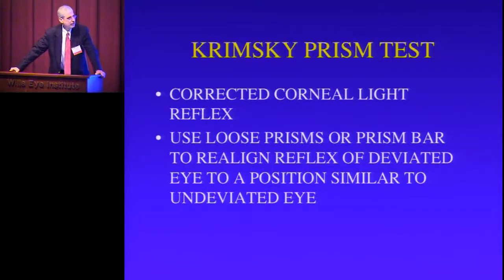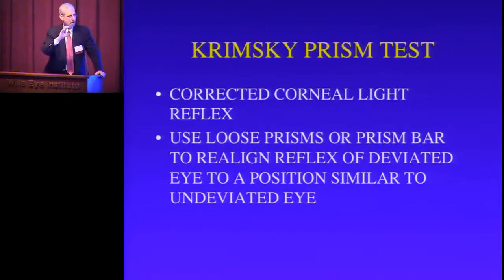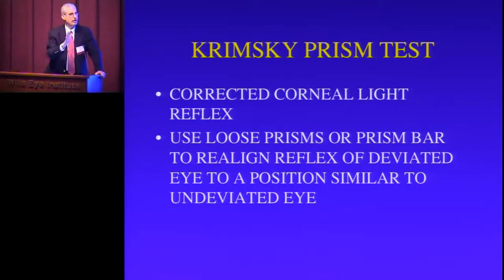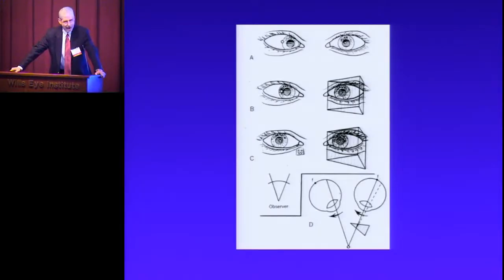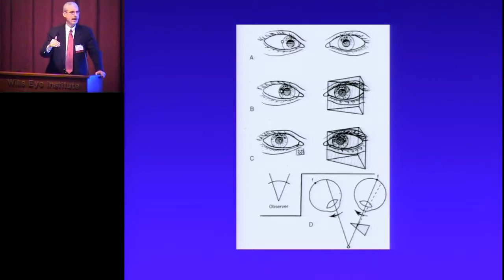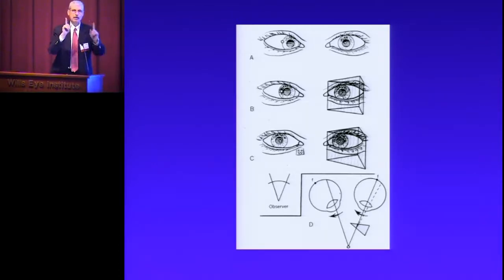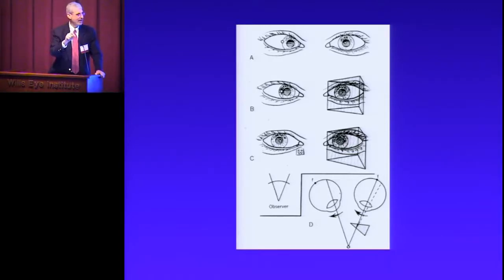From the corneal light reflex test comes what's called the Krimsky prism test. That's where we take the deviated eye and take the deviation on the cornea from the corneal light reflex test, and center it so it becomes symmetrical with both eyes — by using either loose prisms or a prism bar. In diagram A, we see a very large esotropia; the left eye is fixating, the right eye is deviated. With increasing amounts of base-out prism in the opposite eye, it comes to a point where the light reflexes are symmetrical in both eyes. At that point, we know how much the eyes are deviated.